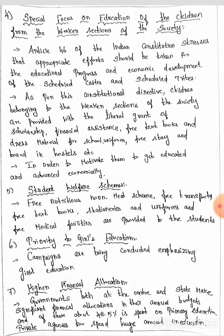Special focus on education of children from the weaker section of the society. Article 46 of the Indian Constitution stresses that appropriate effort should be taken for the educational progress and economic development of the scheduled castes and scheduled tribes. As per this constitutional directive, children belonging to the weaker section of the society are provided with liberal grants of scholarship, financial assistance, free textbooks and rest materials for school uniform, and free stay and board in hostels.